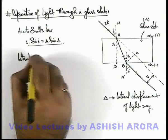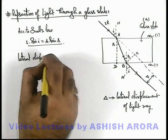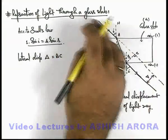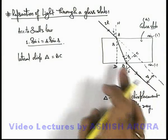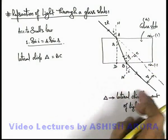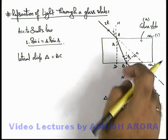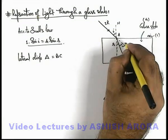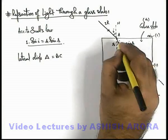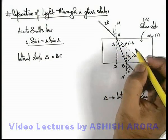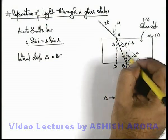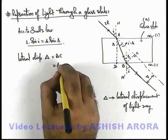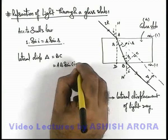Then here we can directly write lateral displacement, Δ will be equal to BC, which is the normal on the initial direction of the ray from point B. This distance we can calculate by using this angle which we can write as i minus r. So this distance BC we can write as AB sin(i - r).